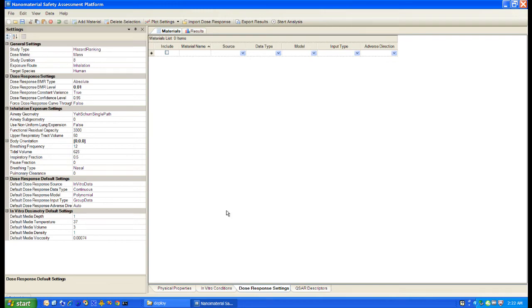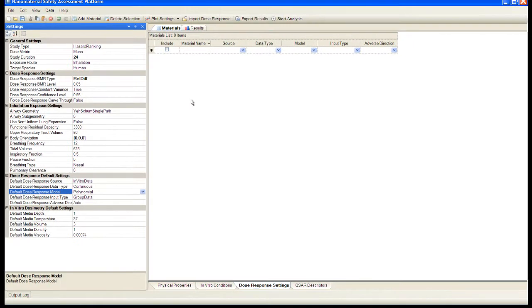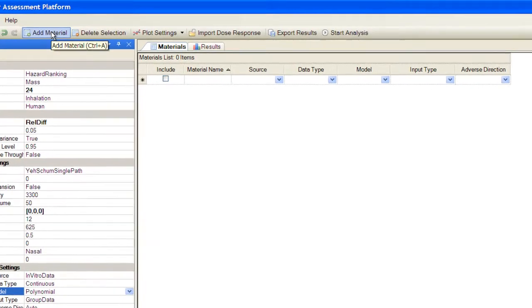First, we'll create a new project using the New Project button. Next, we need to add some materials to our material list. We'll do that by pushing the Add Material button on the main menu.